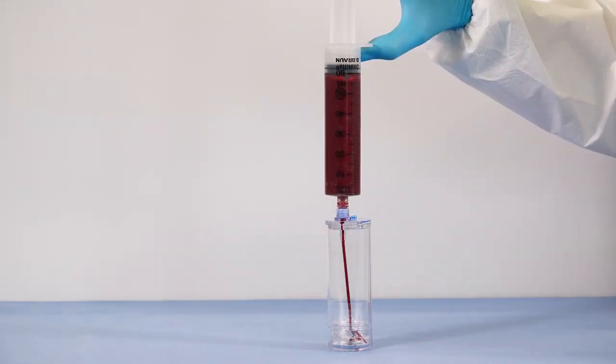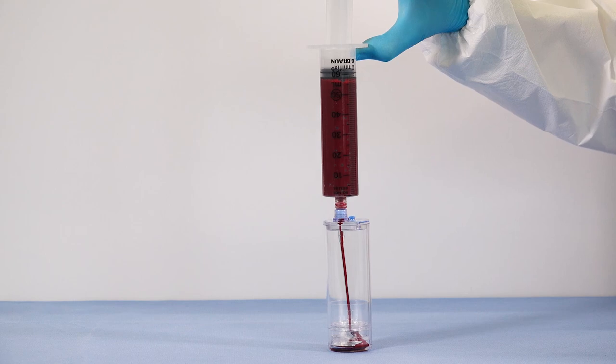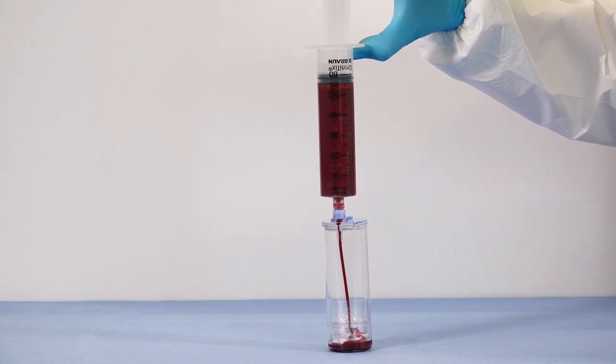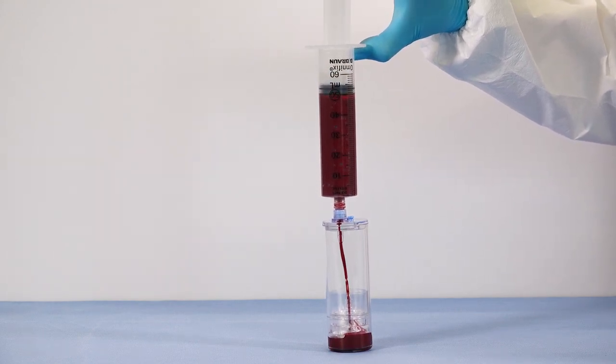Attach the 60-milliliter blood syringe to the needleless port and slowly inject the anticoagulated blood into the device.